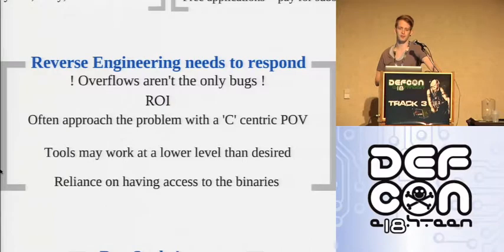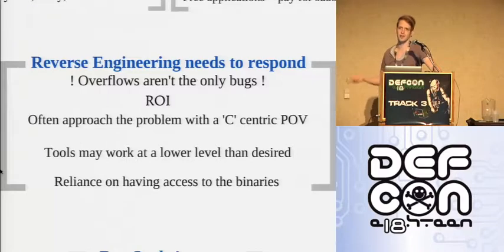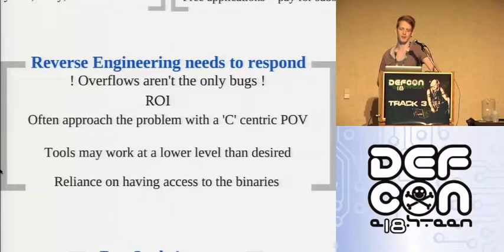A lot of reverse engineering toolkits are done in a C-centric manner. With newer reflective languages, people are stuck in a decompilation mindset when there may be better ways to approach it. And most toolkits for Python reversing relied on having access to the file on disk — doing a static reverse on the serialized object. If you're working in a service-oriented method, that might not be the case.